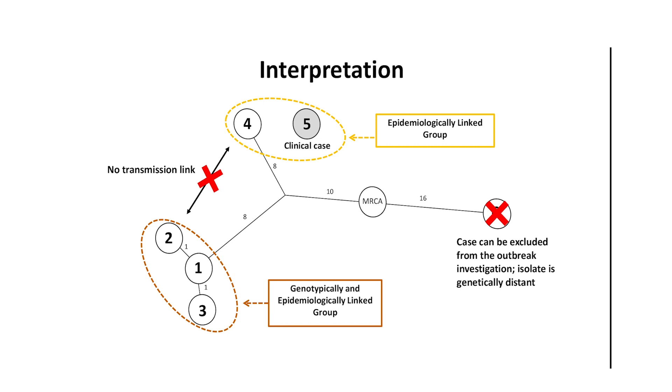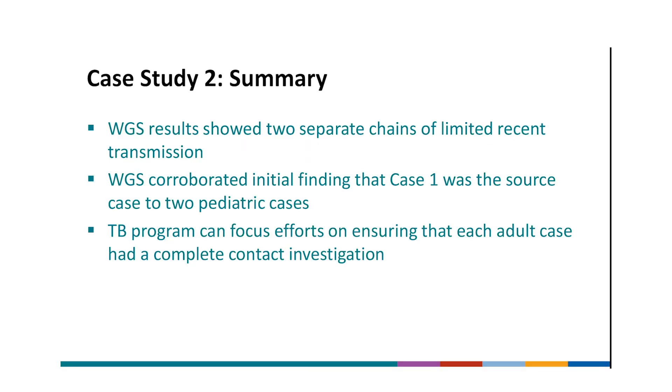We were also happy to learn that patient 6, on the far right side of the tree, had TB that was genetically distant by 34 SNPs from the other adult patients. Patient 6 is also on the other side of the most recent common ancestor, meaning that case had distinct SNPs that no other cases in the genotype cluster had, further indicating patient 6 is unlikely to be related to the other cases by recent transmission. We were then able to exclude patient 6 from the investigation. To summarize, sequencing results showed two separate chains of limited recent transmission. Sequencing also corroborated the initial finding that patient 1 was the source case to two pediatric patients. This information helped the program focus efforts on ensuring that each adult patient had a complete contact investigation, rather than also trying to find links between patients that did not exist.